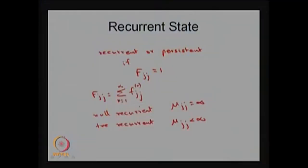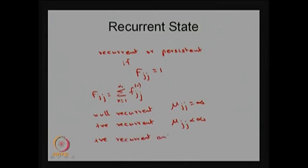Whenever a state is called a recurrent state, it means the probability of ever entering state j starting from state j is certain — the probability is 1. A recurrent state is called null recurrent if the mean first passage time, or mean recurrence time, or mean return time, is infinity. If that is a finite quantity, then the recurrent state is called a positive recurrent state. If any state is positive recurrent as well as aperiodic, then that state is called an ergodic state.